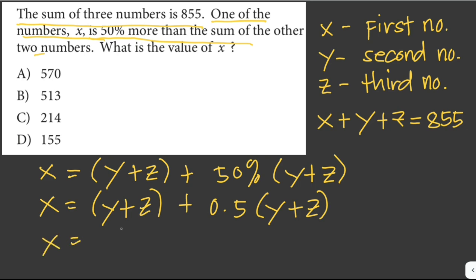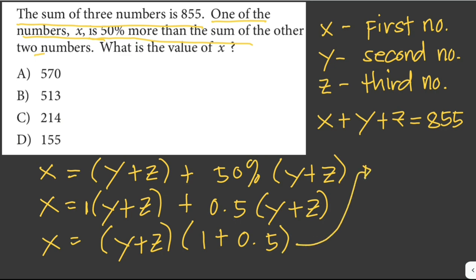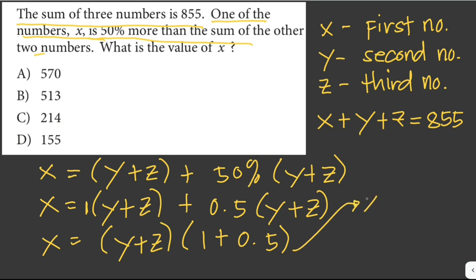We factor out y plus z. The coefficient of the first term is considered 1, so we have 1 plus 0.5. Then we can write this as x equals 1.5 times y plus z.